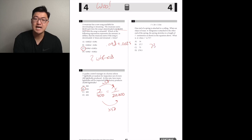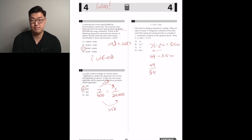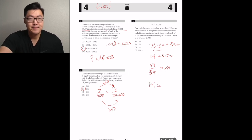One end of a spring is attached to a ceiling. When an object of mass m kilograms is attached, the spring stretches to a length of l centimeters. What is m when l is 73? So 73 minus 24 is 49. Then 49 equals 3.5m, so 49 divided by 3.5 is going to be close to 15 something. So A maybe?